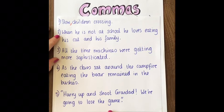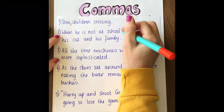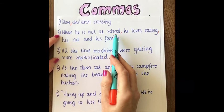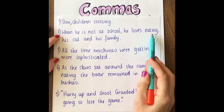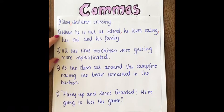In our next sentence: 'when he's not at school he loves eating his cat and his family.' That sounds a bit gruesome! We don't think he really loves eating his cat and his family, so we need to put the comma in the right place. 'When he's not at school, he loves eating, his cat, and his family.' We've got a fronted adverbial — 'when he's not at school' — then he loves eating, his cat, and his family. Definitely not eating them!